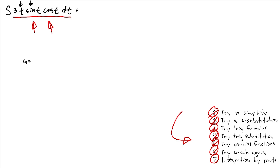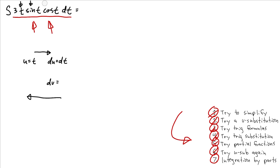So let's say u equals t, and the derivative of u will simply be dt. Now, what about our dv? Looking at these two trig functions — sine of t and cosine of t — they can actually be rewritten using the double angle formula. If you recall, sine of 2x equals 2 sine x cosine x. We're really close to getting that; we're just missing the two.